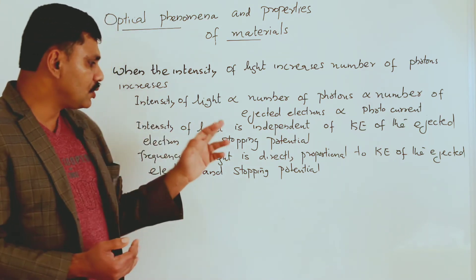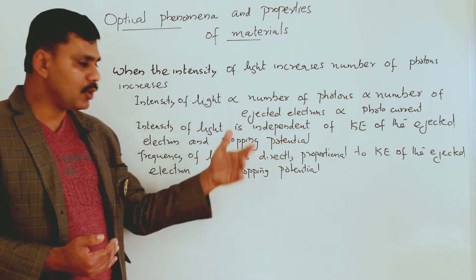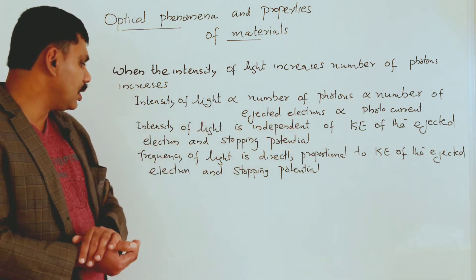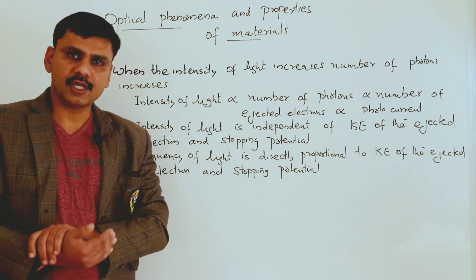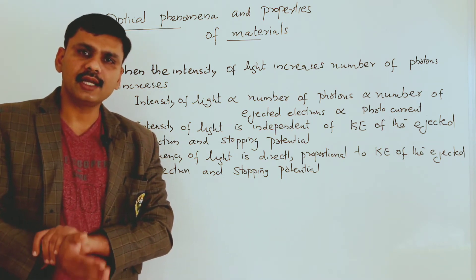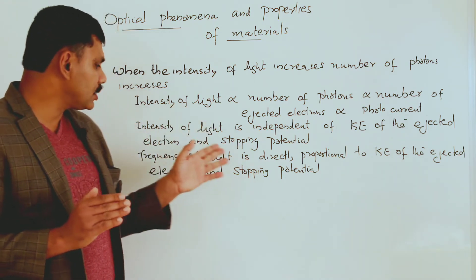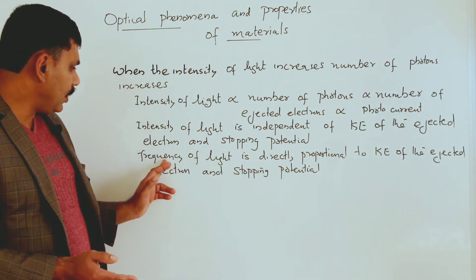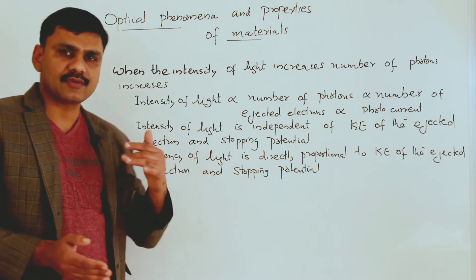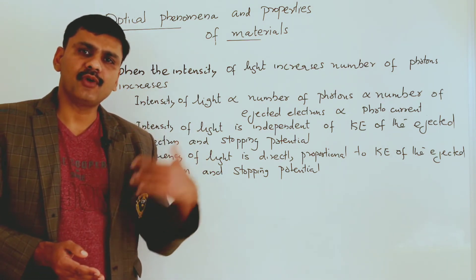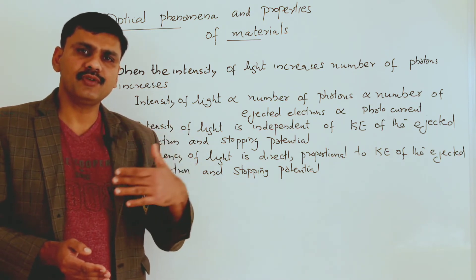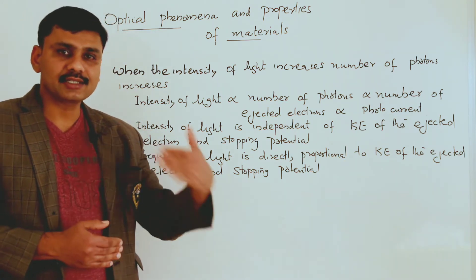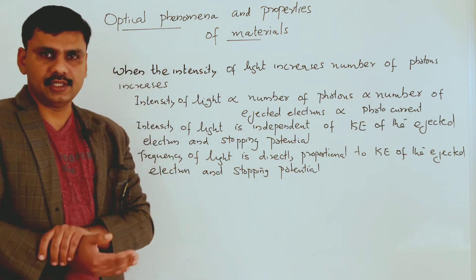Intensity of light is independent of the kinetic energy of the electron and stopping potential — intensity will not change the stopping potential or kinetic energy of ejected electrons. However, when the frequency of light increases, the energy of the photon increases. When the energy of the photon increases, that photon can give more energy to the electron, so the ejected electrons will have more kinetic energy.